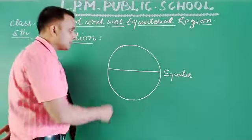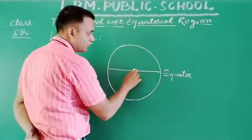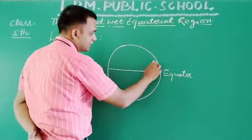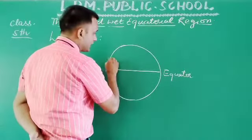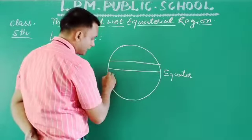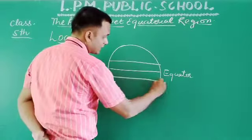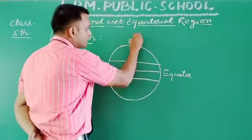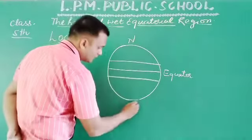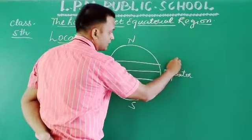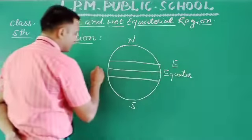In this chapter, we are talking about the location of the hot and wet equatorial region. The location of the hot and wet equatorial region is 10 degrees north and 10 degrees south of the equator.